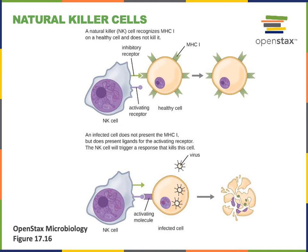Natural killer cells have receptors that recognize a virally infected cell. A healthy cell expresses an MHC1 protein on its surface, which binds to an inhibitory receptor on a natural killer cell, preventing that natural killer cell from becoming activated. But when one of our cells becomes infected with a virus, it will express an activating molecule on its surface. The infected cell stops expressing MHC1, removing the inhibitory signal, and instead expresses a different protein that stimulates the activating receptor on the natural killer cell.